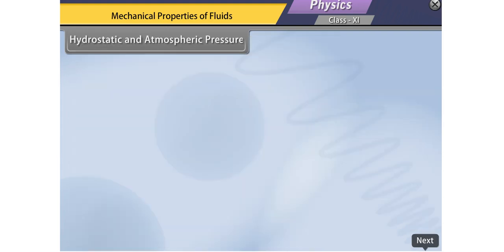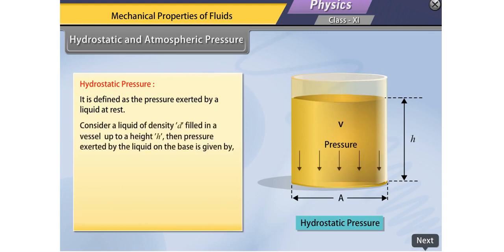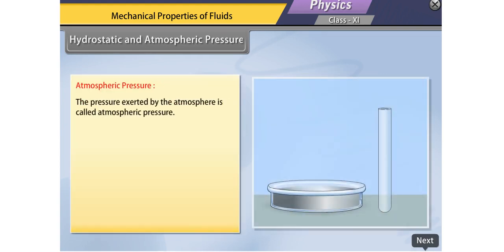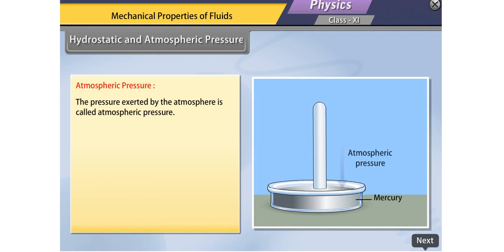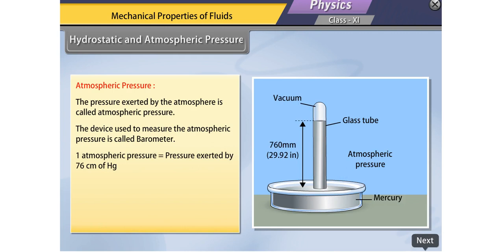Hydrostatic pressure is defined as the pressure exerted by a liquid at rest. Consider a liquid of density D filled in a vessel up to height H. The pressure exerted by the liquid on the base is given by P = HDG. This shows that hydrostatic pressure depends on the vertical height and density of the liquid. Atmospheric pressure is the pressure exerted by the atmosphere, measured using a barometer. One atmospheric pressure equals the pressure exerted by 76 cm of mercury, or 1.013 × 10⁵ N/m².